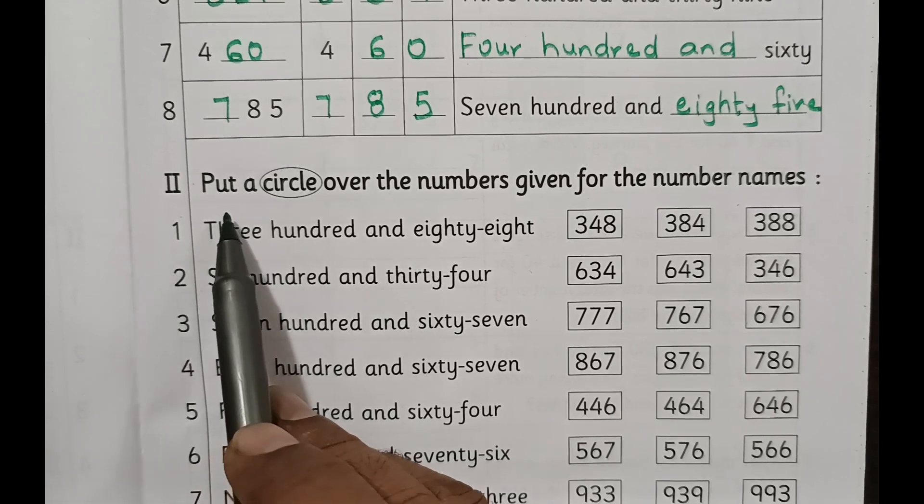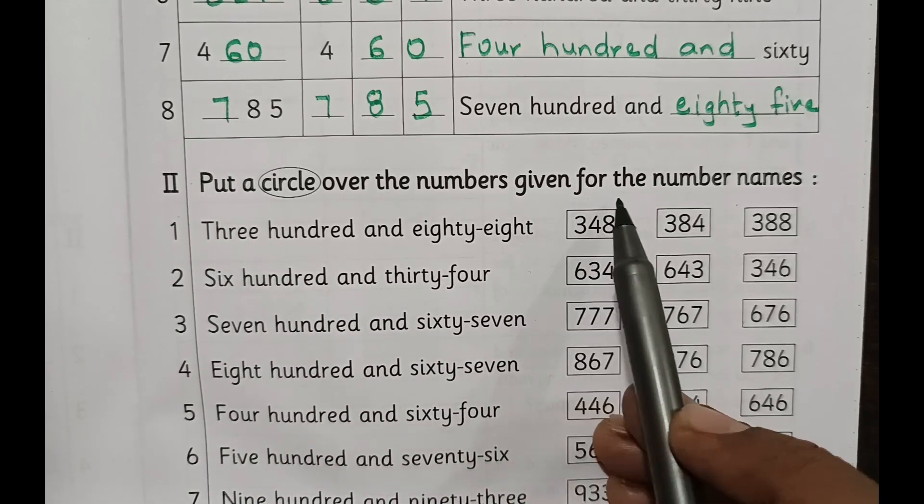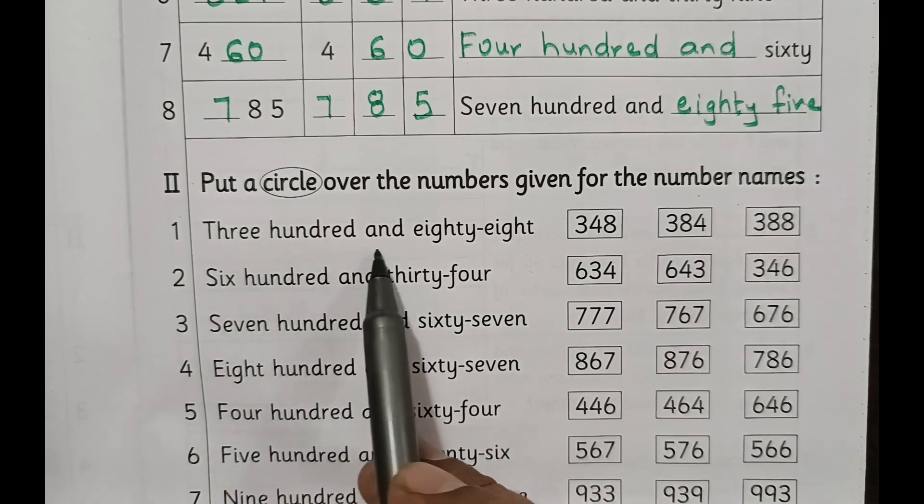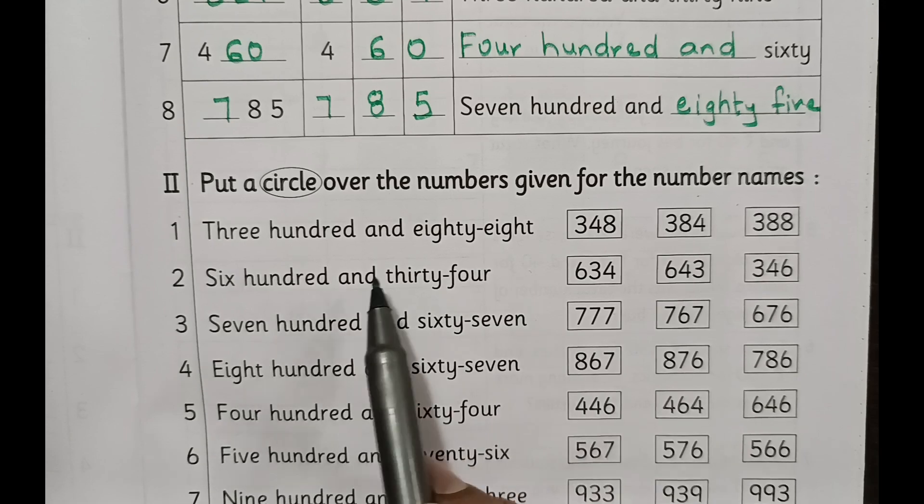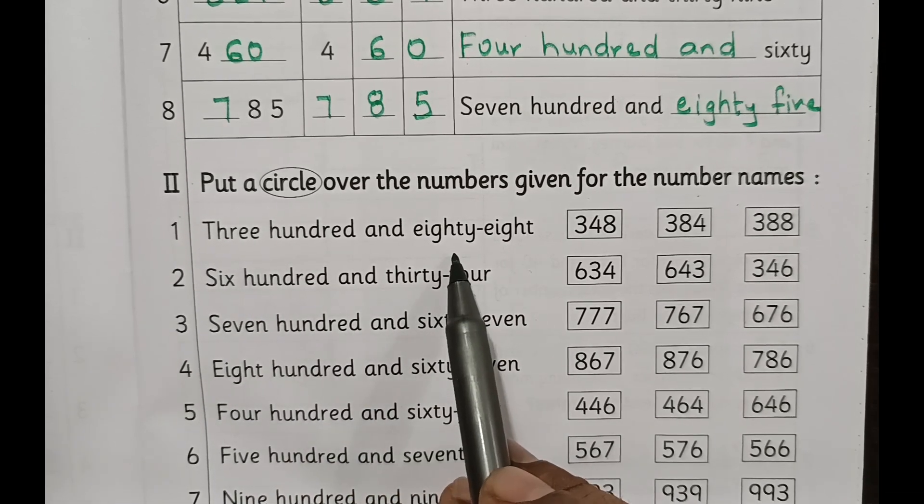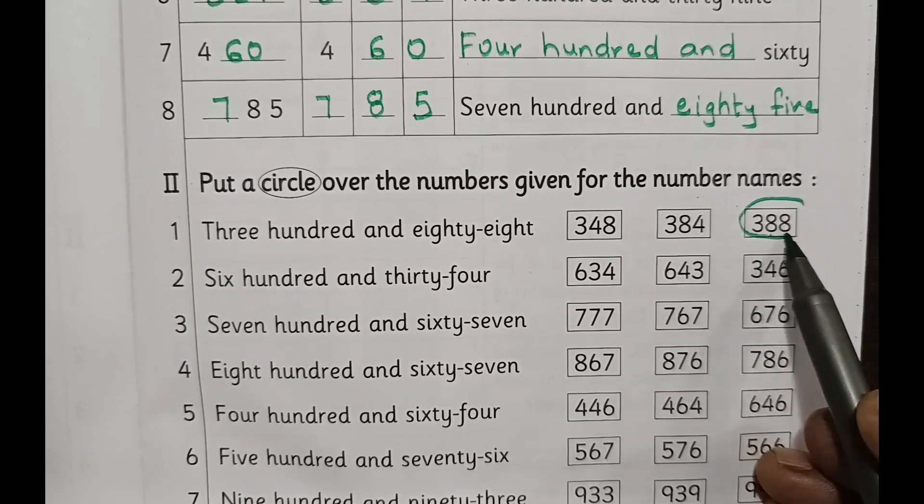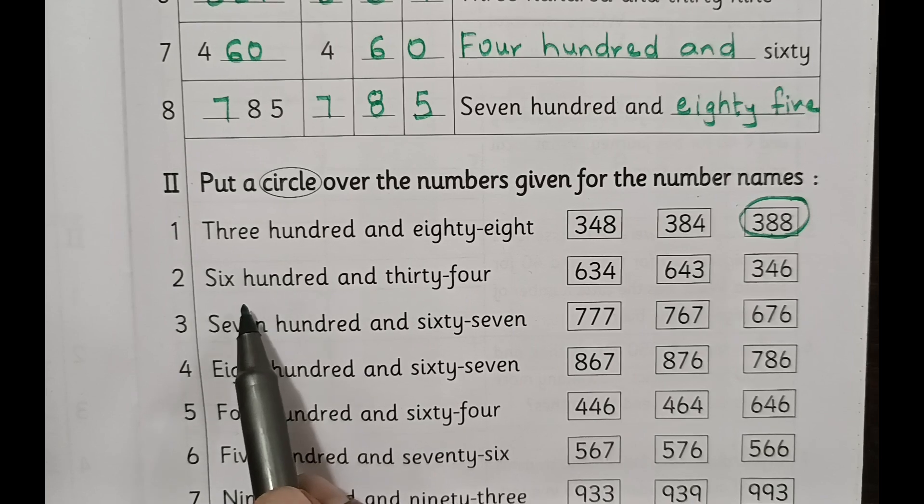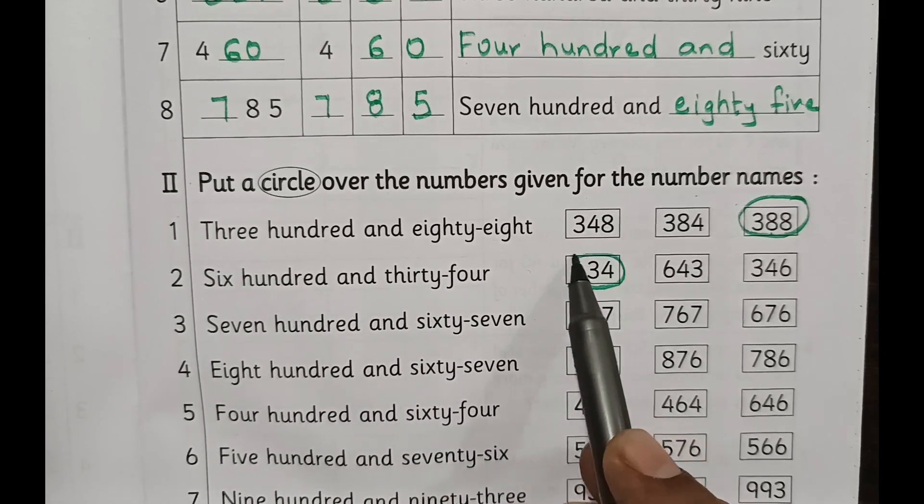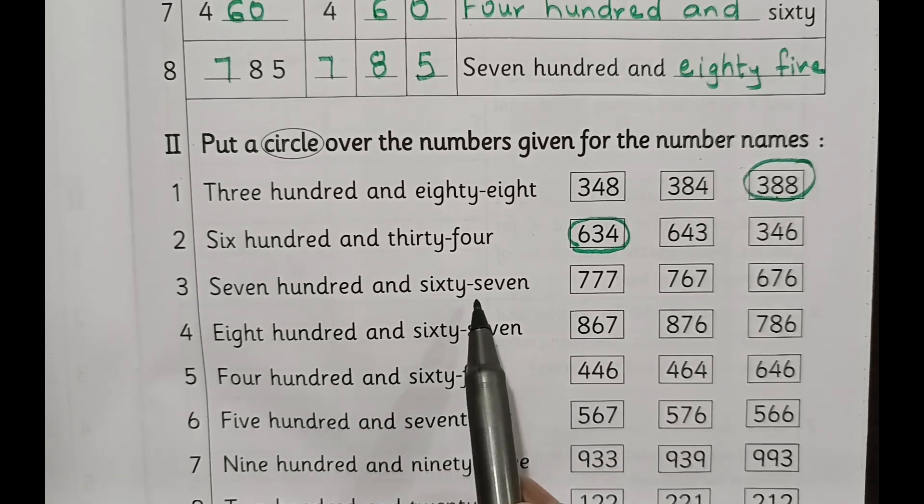Question number two: put a circle over the numbers given for the number names. Your number name is given, whichever is correct we ought to circle it. Three hundred and eighty-eight, three hundred and eighty-eight, circle it. Six hundred and thirty-four, six hundred and thirty-four. Seven hundred and sixty-seven.